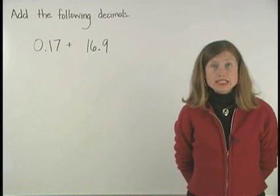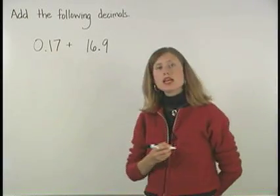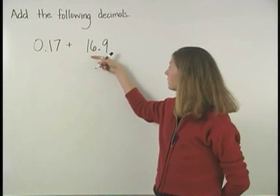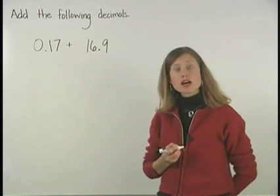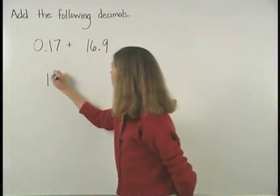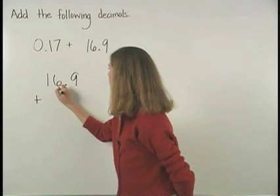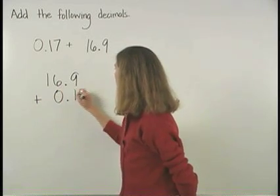To add decimals, first line up the decimal point of each number. In this problem, I would put 16.9 on top since it's the larger number. So we have 16.9 plus 0.17.